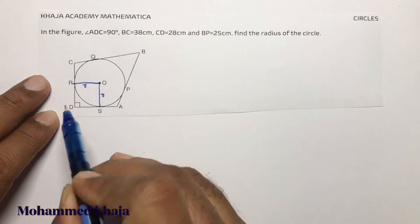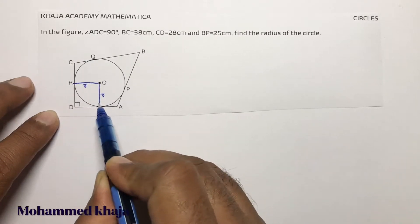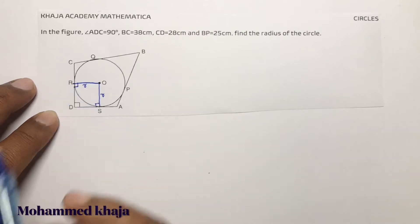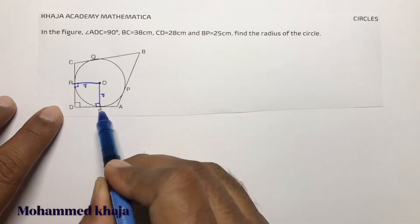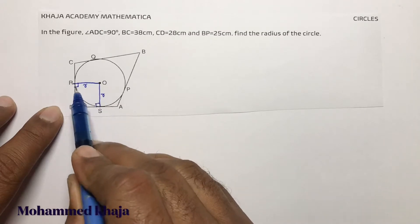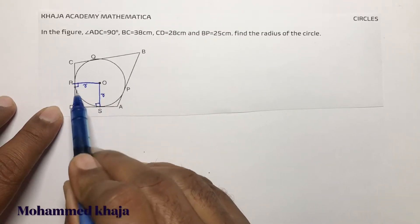See here, the angle is 90°. Here the angle is 90°. Here also the angle is 90° because angle between radius and tangent is 90°. And here also D is 90°.